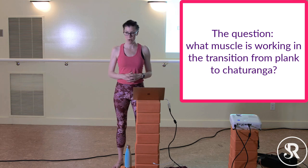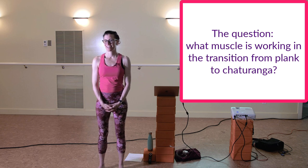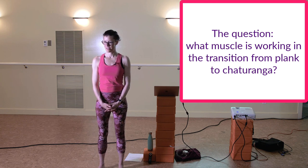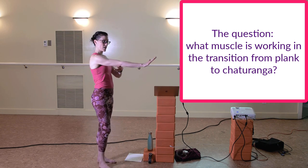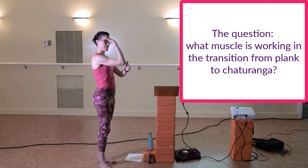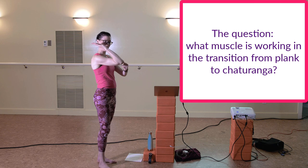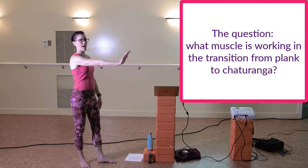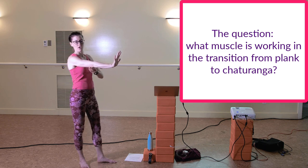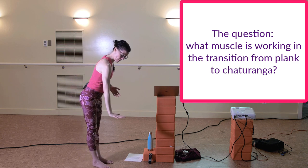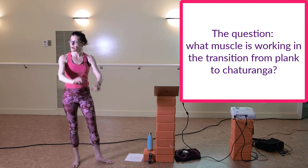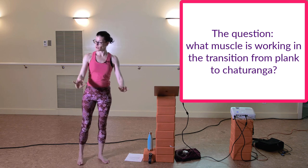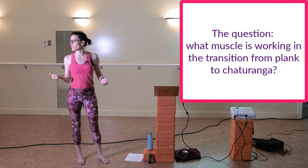The tricep is involved. Going from plank down to chaturanga — is the tricep lengthening or shortening? It's lengthening, right — it attaches here and here, and we're taking the end away. So it's working but lengthening. Straighten your arm fully: you feel the tricep engage. Then lowering down, it's lengthening while resisting the full weight of your body plus gravity — it's breaking the fall. That's why our triceps get so strong in yoga.